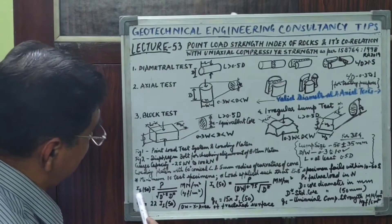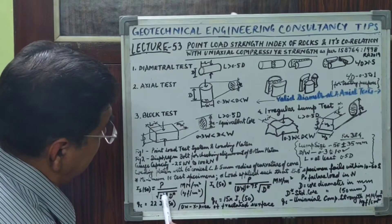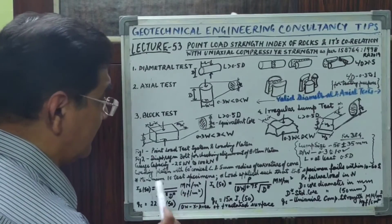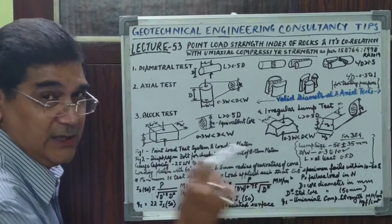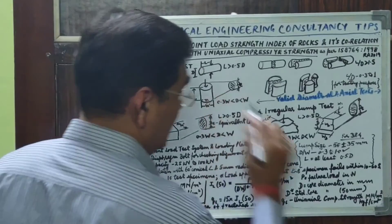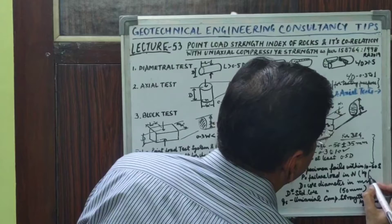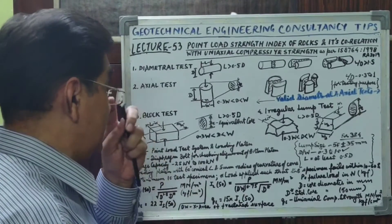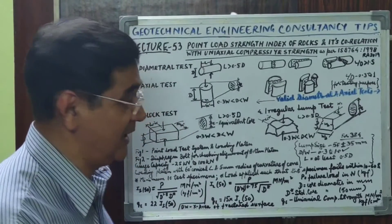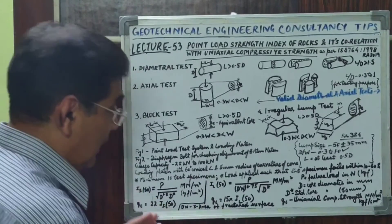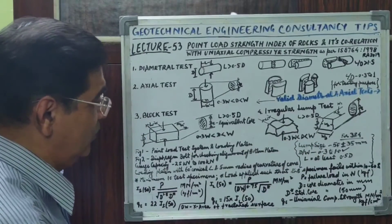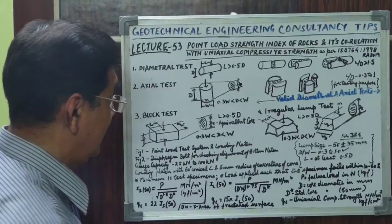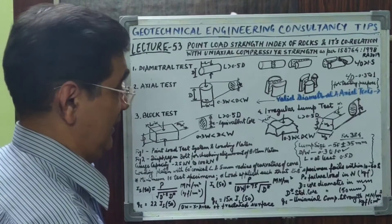For the diametral and axial test, the Point Load Strength Index IS(50) is calculated as P divided by the square root of De to the power 1.5, where the standard core diameter D* is specified as 50 mm everywhere for size correction. For the irregular lump strength test the formula changes slightly to P divided by Dw to the power 0.75 multiplied by the square root of De, where Dw is the minimum cross-sectional area of the fractured surface.